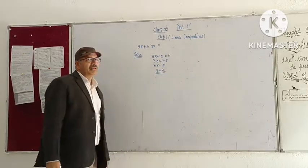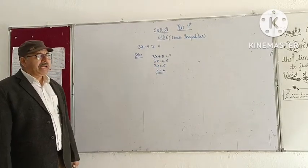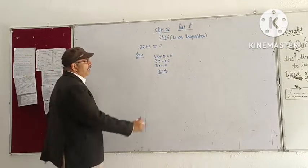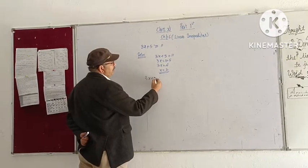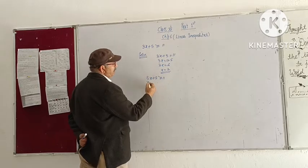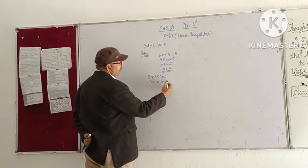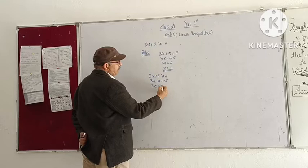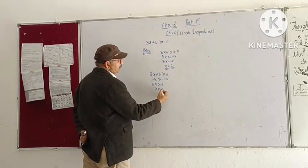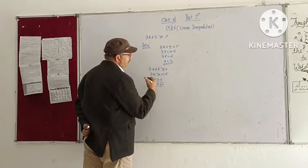But if I am not correct, the inequality is in India, same way you go to the same thing. 3x plus 5 is greater than or equal to 11, 3x is greater than or equal to 11 minus 5, 3x is greater than or equal to 6, and x is greater than or equal to 2.